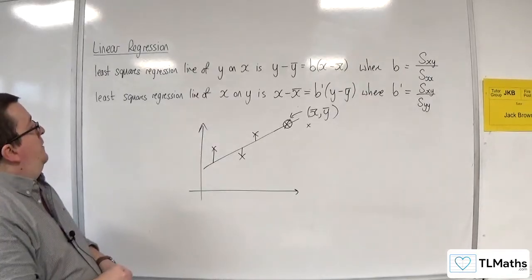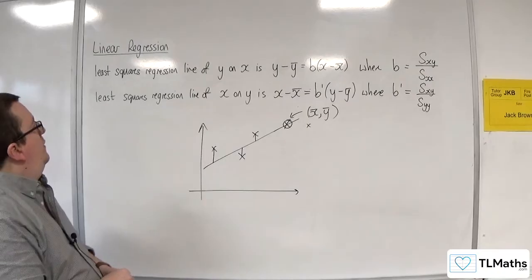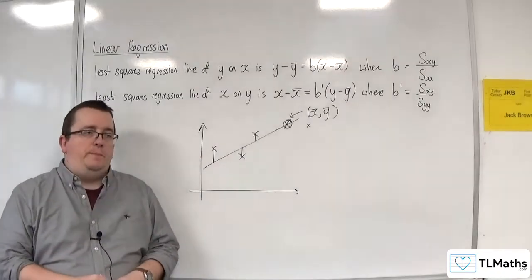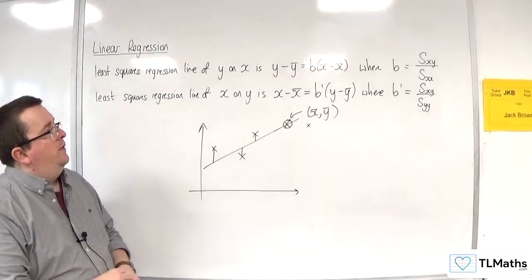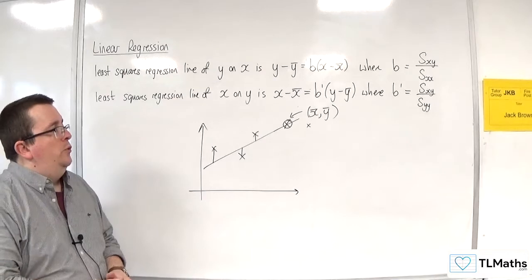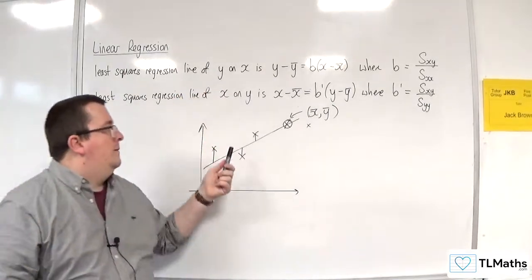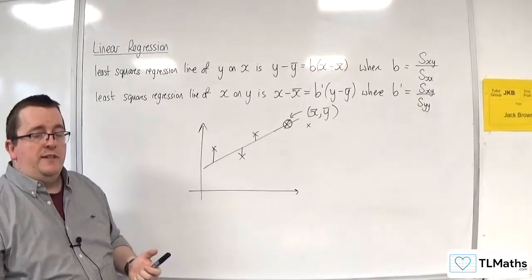You might also be wondering why are there two? Why have we got this y on x and x on y regression line? The reason there are two is they come from two subtly different calculations. The y on x one is looking at minimising the squares of those vertical distances.